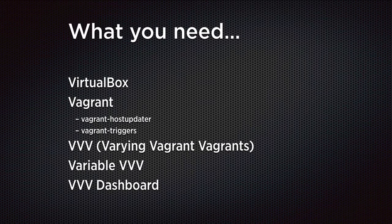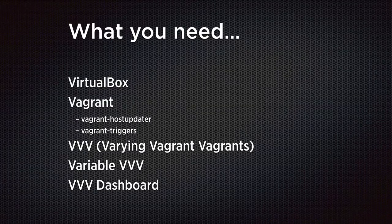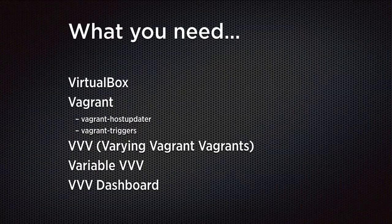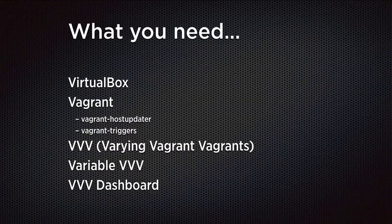What you need to get started are essentially 5 bits of software that I use in my workflow. There are other ones you can substitute in and use, but these are the ones I would use: VirtualBox, Vagrant itself, VVV, Variable VVV, and VVV Dashboard. A lot of people think, well, how do they all fit together and why do we need all these bits of software?